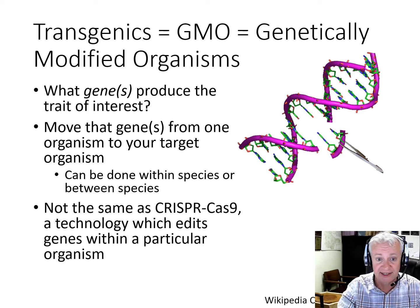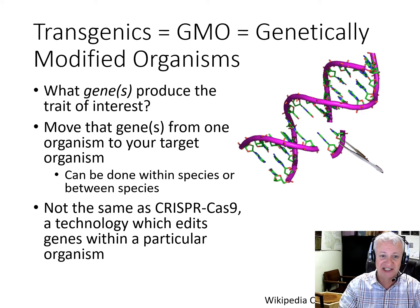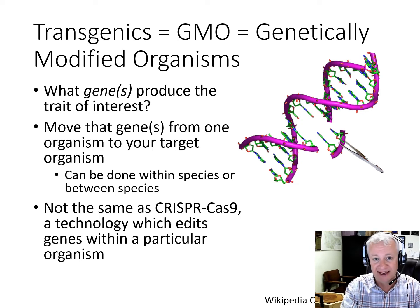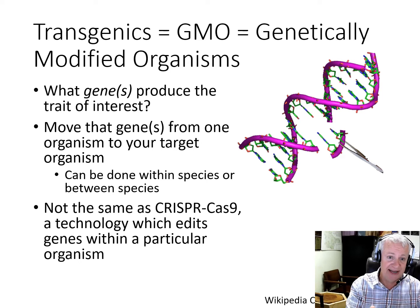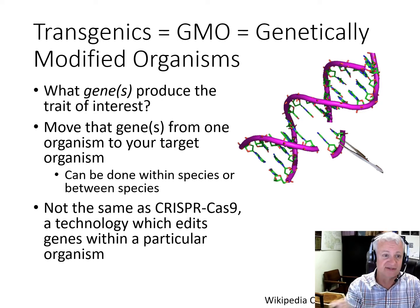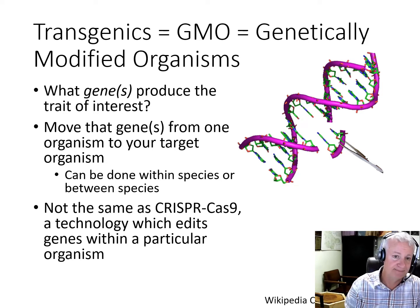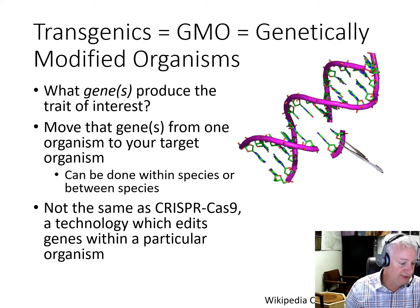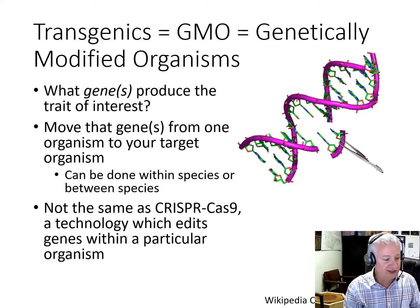You can see how that could be a shortcut to traditional tree breeding, where we essentially just look, phenotypically, for better examples in the breeding population. This is not the same as CRISPR-Cas9, which is a technology where individual genes in an organism are edited, but there's no movement of individual genes from one organism to another.